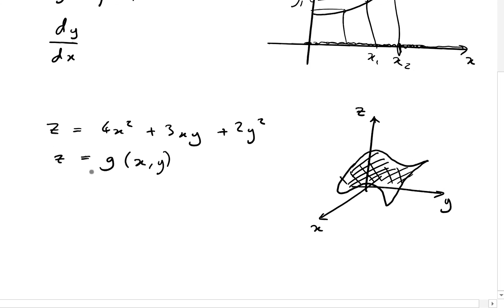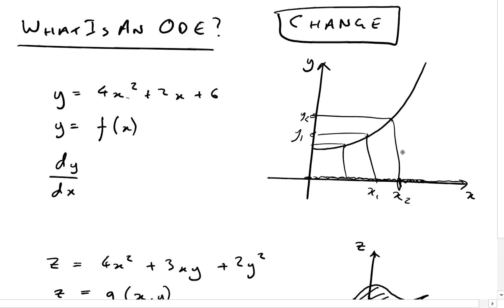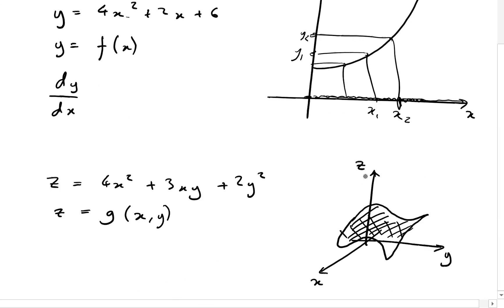Now if I want to find how one variable changes with respect to another, I can't do it like we did before where we just had two variables. Now I need to be clever because I want to see how z changes, and I need to choose how z changes with respect to which variable - in other words I need to choose my direction. Do I travel in the y direction, or forward and backwards in the x direction? I have to choose which values I vary - do I vary x or do I vary y? I can vary either one. So if I vary x, I'm differentiating z with respect to x.